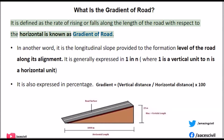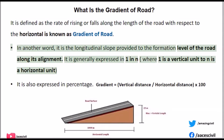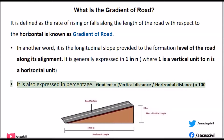The gradient of road is defined as the rate of rising or falling along the length of the road with respect to the horizontal. In another word, it is the longitudinal slope provided to the formation level of the road along its alignment. It is generally expressed as 1 in N, where 1 is a vertical unit and N is a horizontal unit. It is also expressed in percentage.